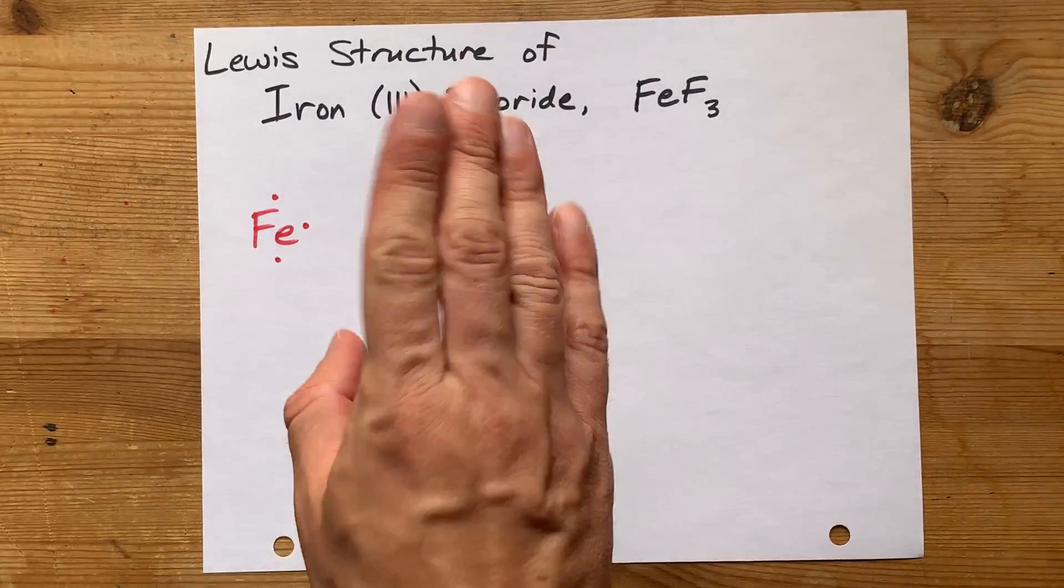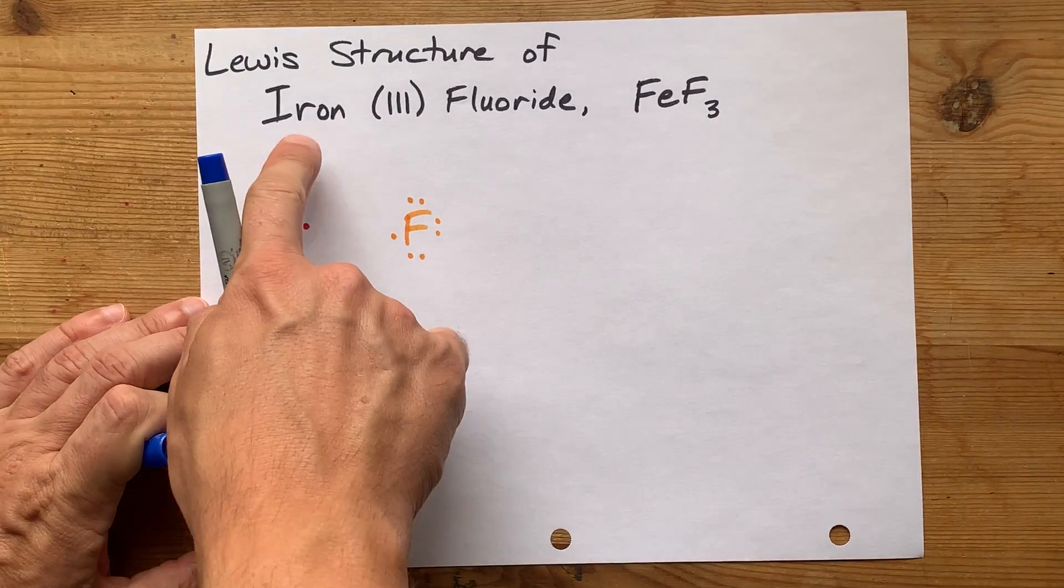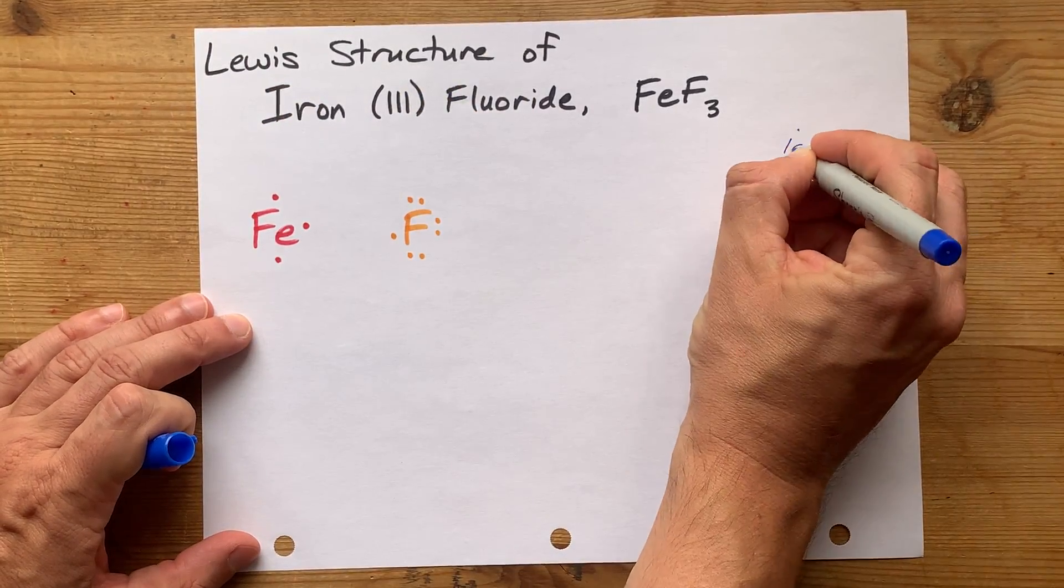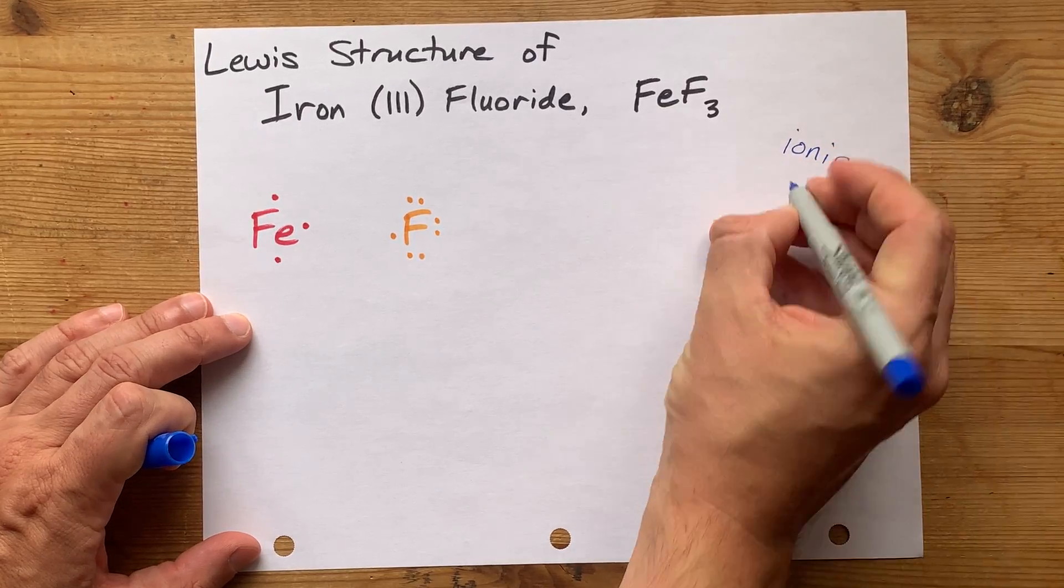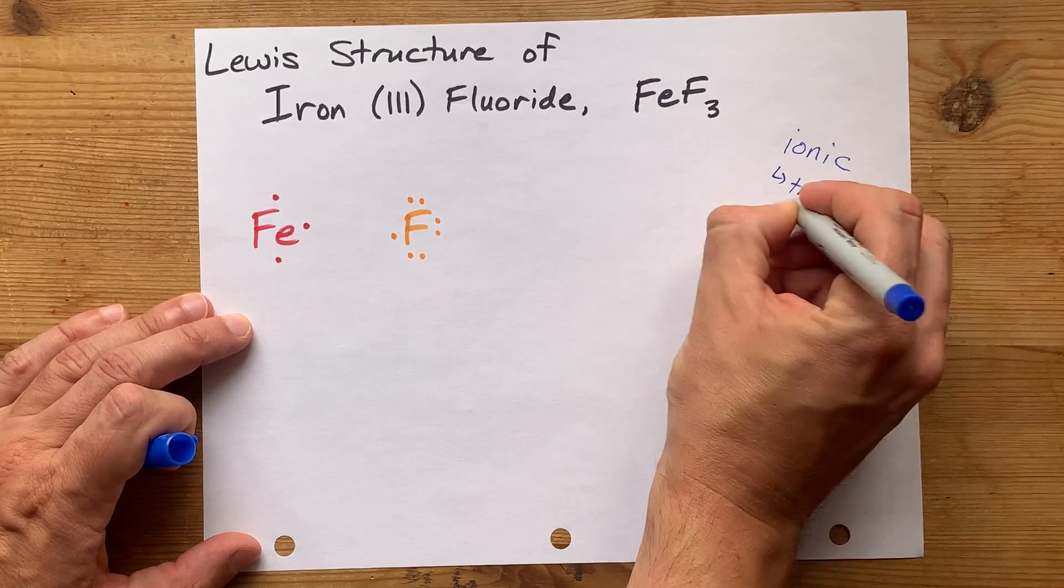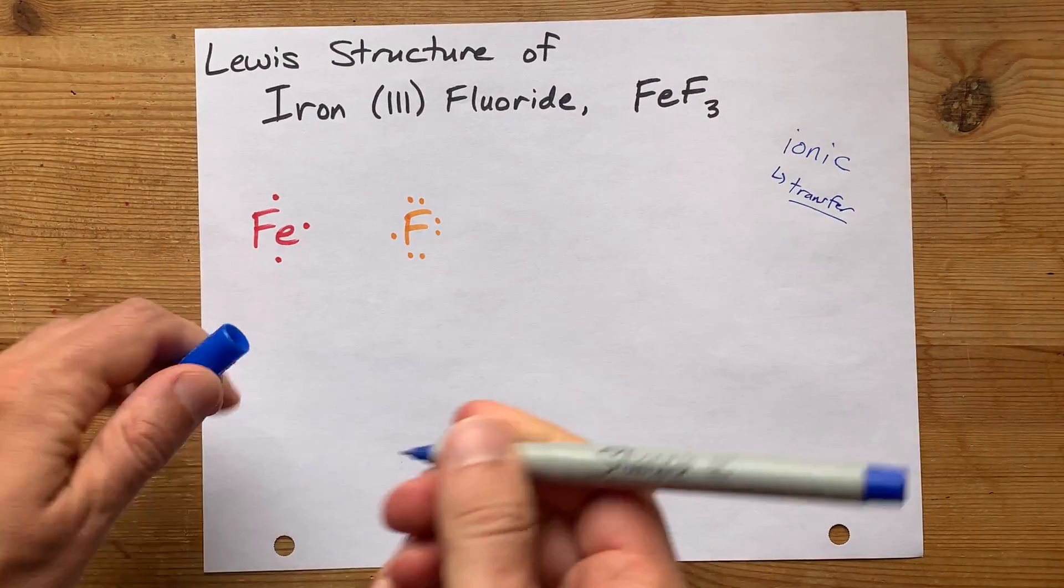Now, this is an ionic compound, and I know that because that's a metal, and that's a non-metal. And when metals and non-metals combine, they make ionic compounds. There is a transfer of electrons from metal to non-metal.